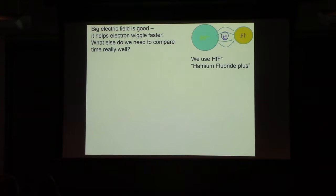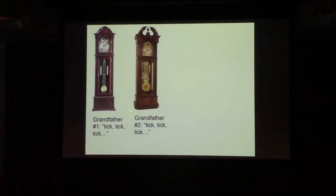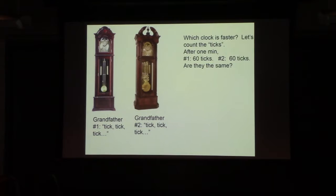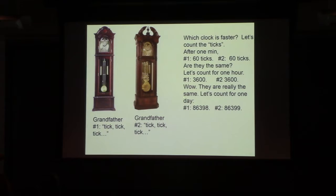We need to measure the frequency really well. If we want to measure time really well, like say we have two grandfather clocks, and we want to measure which clock is fastest. This one's going tick, tick, tick. This one's going tick, tick, tick. So we can count for one minute. This one will tick 60 times, that goes tick 60 times. Are those two frequencies the same? Seem to be. Let's do better. Let's count for one hour. This one ticks 3,600 times, that one ticks 3,600 times. Yep, pretty much the same. Oh, wait a minute. If we're really patient, we'll count for a whole day. If I discover that this one ticks one time more than that. This one is gaining one second in one day. So if we want to compare frequencies really well, you need to be able to compare them for a long time, a long coherence time. So how do we do that?